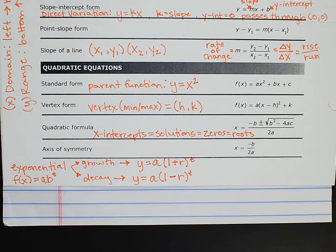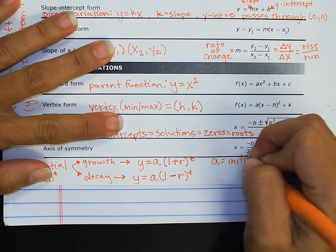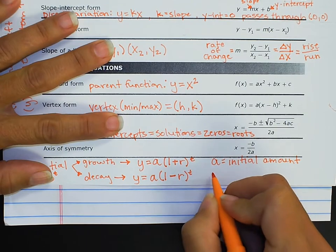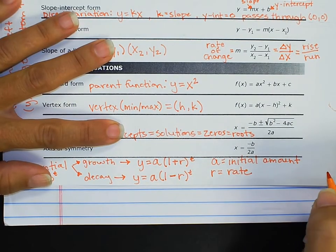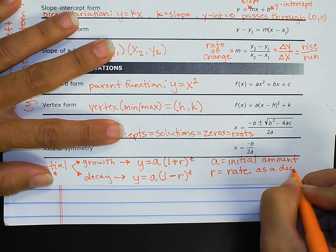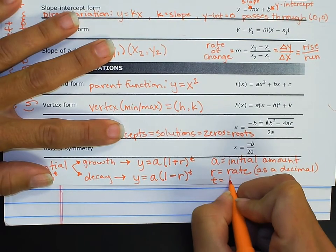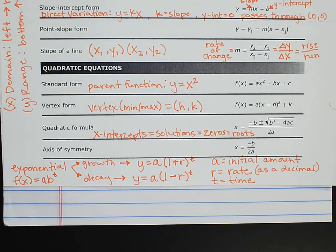We need to know what all these letters mean because there will be questions about exponential functions on the test. You have to know what the letters mean and where to put things. So: a is going to be your initial amount — whatever you start with. r is going to be the rate — the rate of growth or decay — and it needs to be written as a decimal. And t is going to be time.